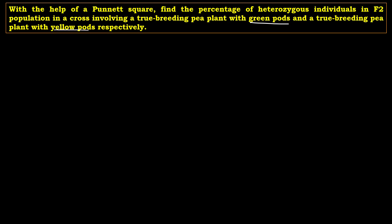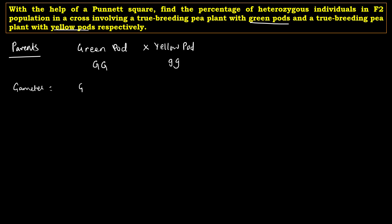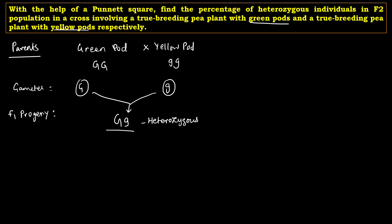We have to make the cross all the way up to F2 generation, starting always with the parents. The parent with green pod is capital G, capital G because green is dominant, and yellow pod is small g, small g. The gametes are capital G and small g. The F1 progeny is capital G, small g — a heterozygous hybrid — and the phenotype is the green pod.